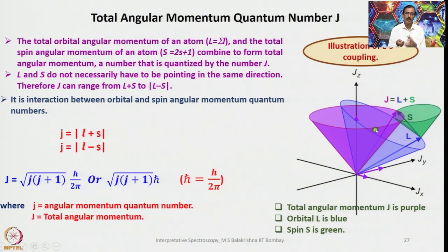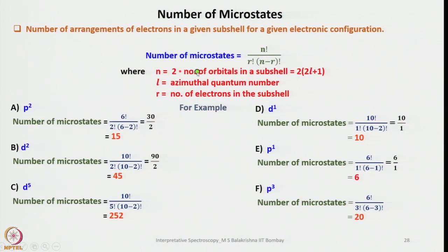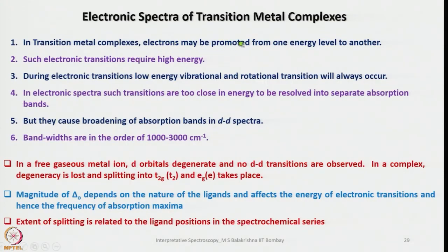The total angular momentum quantum number J combines the orbital angular momentum L (blue) and spin S, so J = L ± S. Microstates and term symbols are very important. The number of microstates is given by N!/r!(N−r)!, where N is the capacity of the subshell. For d electrons N = 10, for p electrons N = 6. During electronic transition, low energy vibrational and rotational transitions also occur, but their energy differences are too close to resolve, resulting in band broadening of 1000–3000 cm⁻¹.